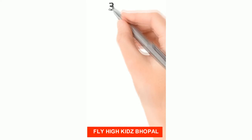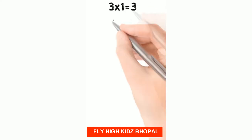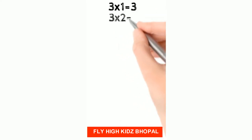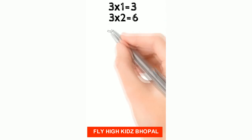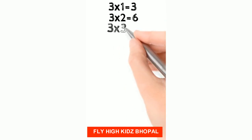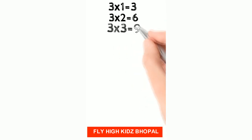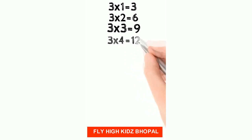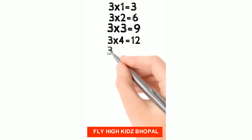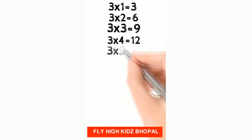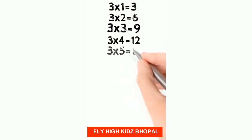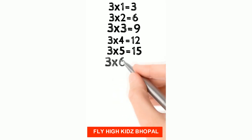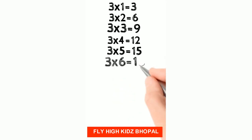3 1's are 3, 3 2's are 6, 3 3's are 9, 3 4's are 12, 3 5's are 15, 3 6's are 18.